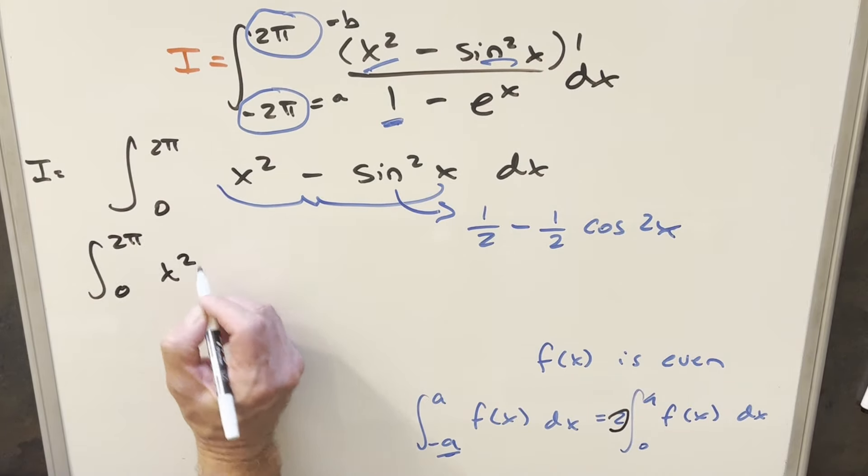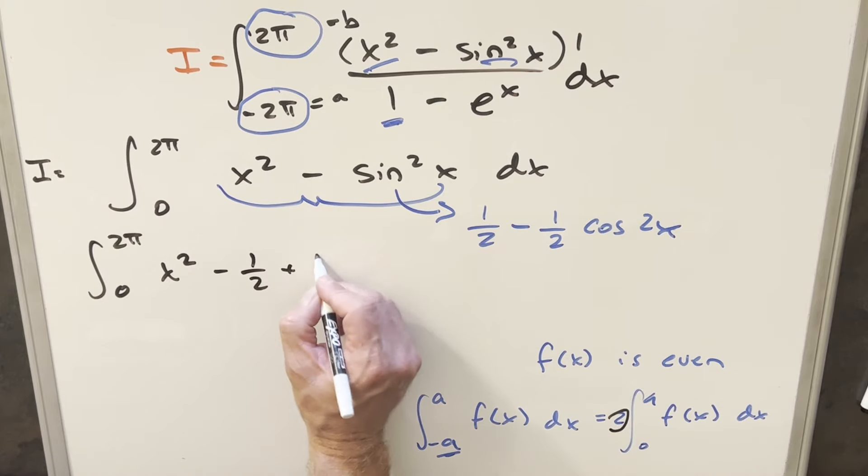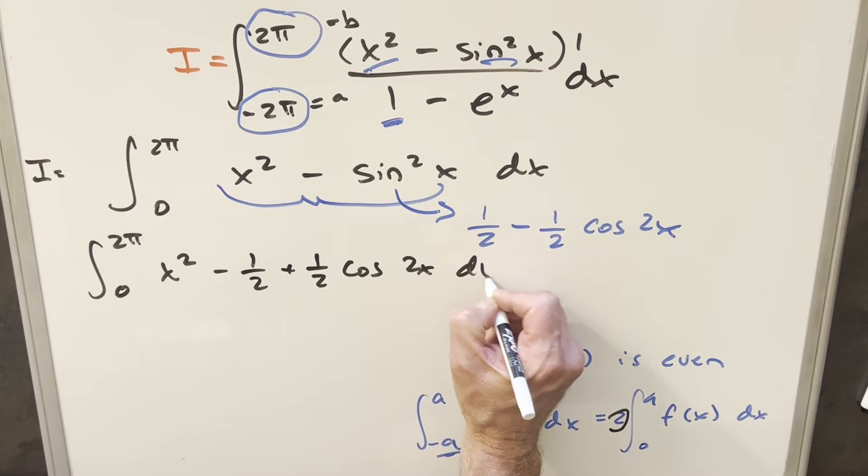Let's just rewrite the whole thing. So we have x² minus, distributing the minus sine, so it's going to become -1/2 minus times minus here is +1/2 cos(2x) dx.